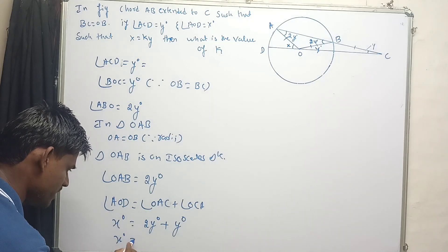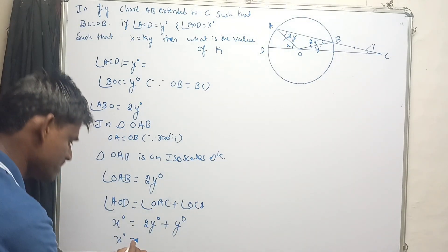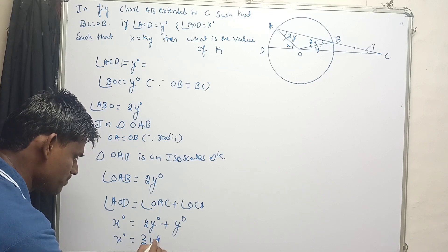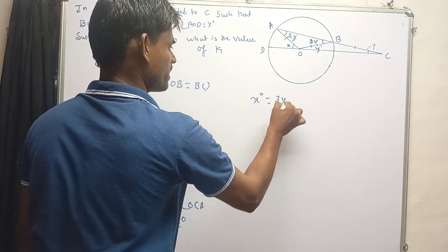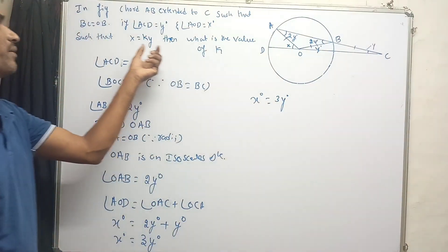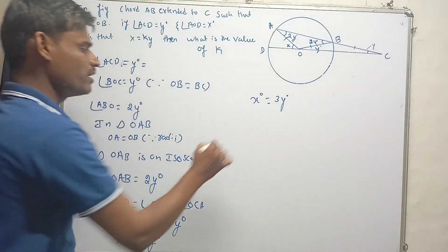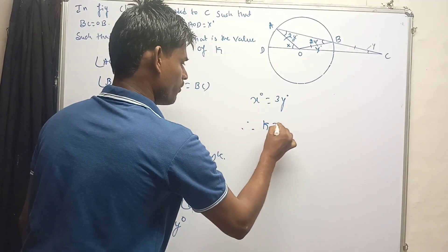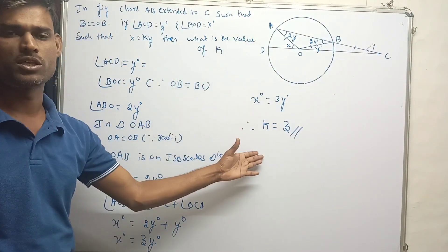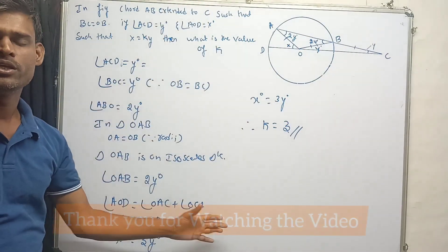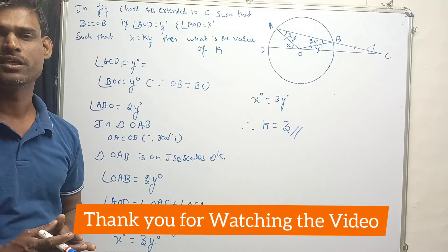So x degrees equals three times y degrees. It is given that x equals k times y, therefore the value of k equals three. That is the solution. I hope you got this solution — thank you for watching the video.